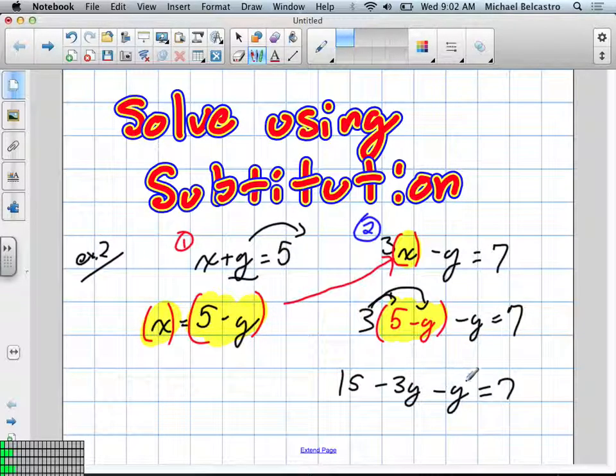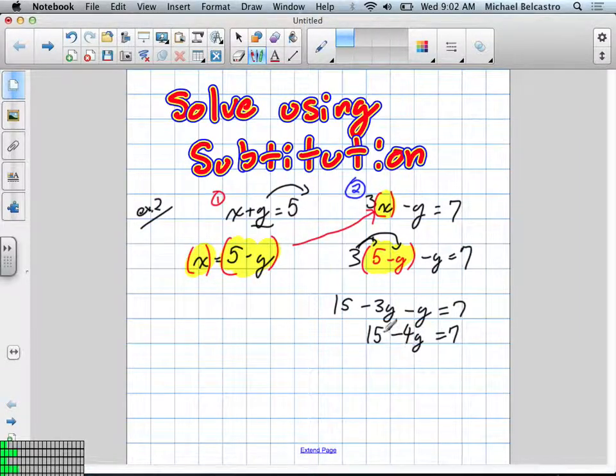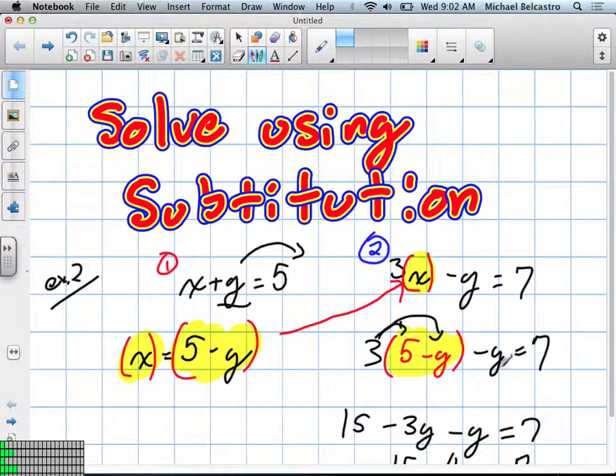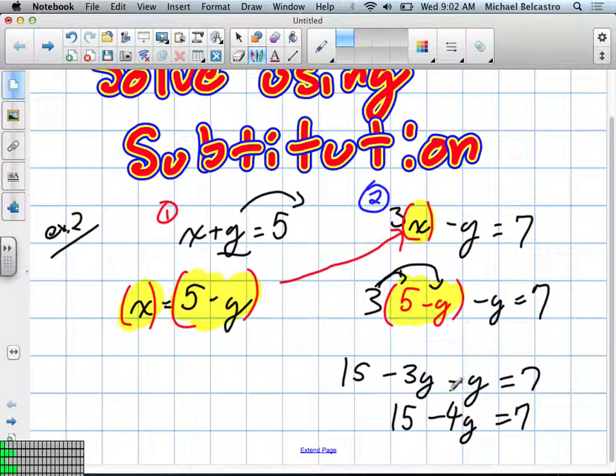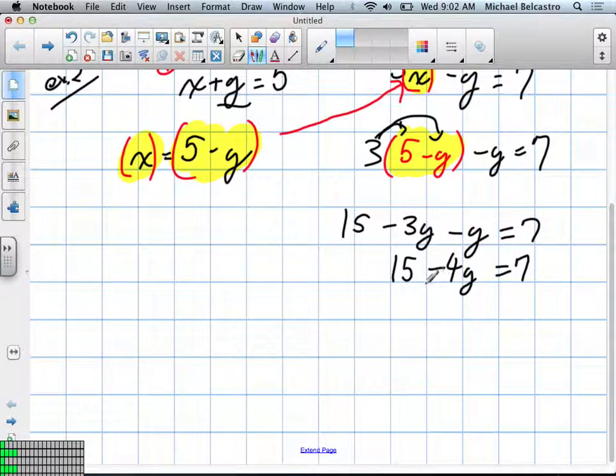Negative 3y minus y will give us negative 4y. We still have 15 over here. I need to get y by itself. So, in other words, I need to move the 15 to the other side of the equation. When I move it over, what's it going to become? Negative.